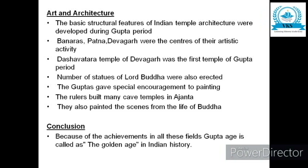As a conclusion, you can write: Because of the achievements in all these fields, the Gupta Age is called the Golden Age in Indian history. When this question is asked, start with an introduction, then write the subheadings — Revival of Hinduism, Education, Literature, Science and Technology, and Art and Architecture — with explanations for each point, and end the answer with a conclusion.